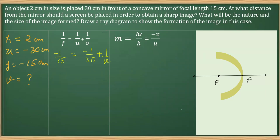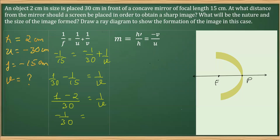Transposing the u term to the left side gives positive 1/30, so 1/30 minus 1/15 equals 1/v. Taking the LCM of 30, we get 1/30 minus 2/30, which gives minus 1/30 equals 1/v. By cross multiplication, v equals minus 30 centimeters. The negative sign indicates that the image formed is real and inverted, on the same side as the object.